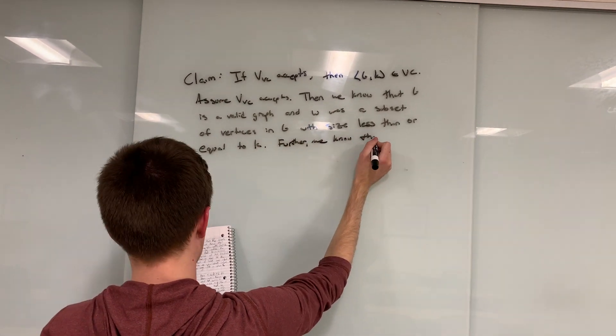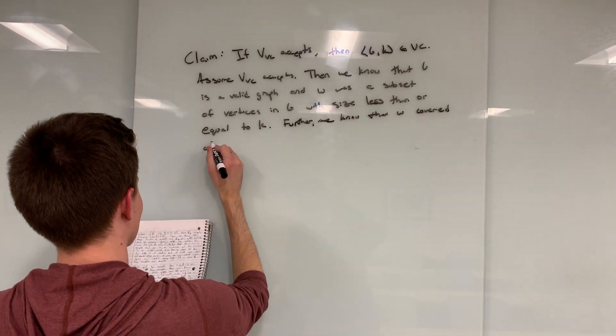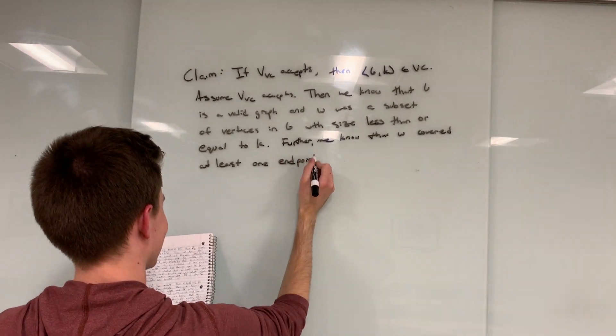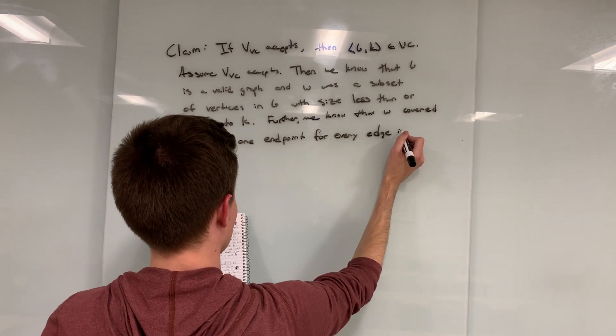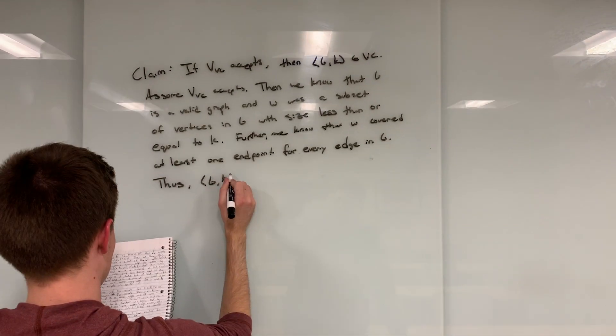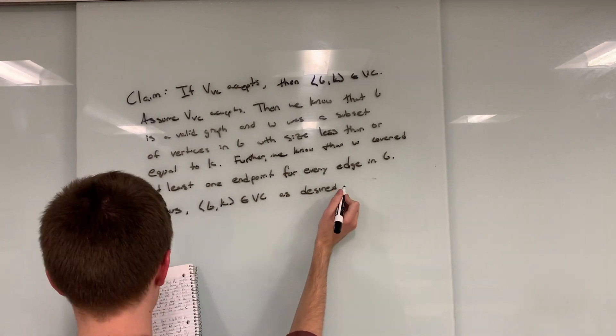Finally, we know that the entire graph of G has been covered in the witness, as this must not have been rejected in step 4 of our verifier. Therefore, G, K is in vertex cover, if the verifier accepts.